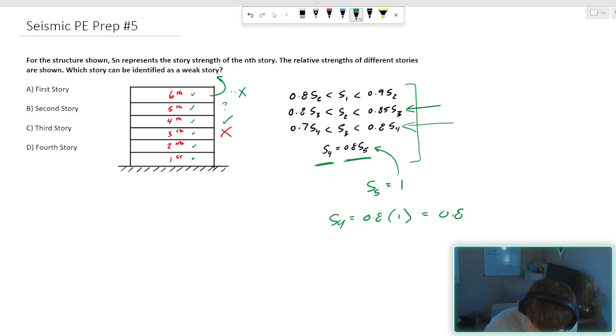What about the second story? We use the next bit of criteria. The second story has the strength somewhere between 85% of story three and 80% of story three. That's enough for me. Even the lower bound at 80% is still hits that threshold. So we don't trigger the irregularity. And then the first floor, the strength of the first floor is somewhere between 80% of strength of the second and 90% the strength of the second. Again, we miss that, we're above the threshold for the irregularity trigger.